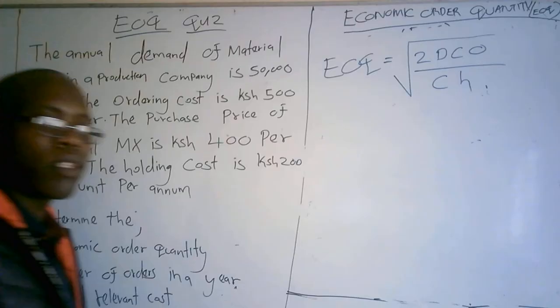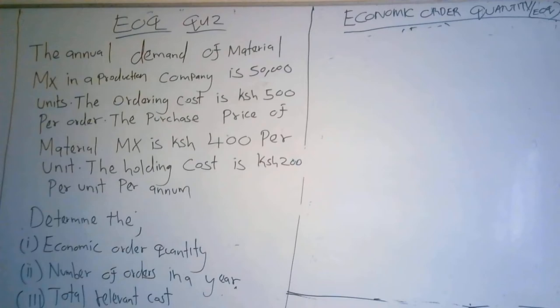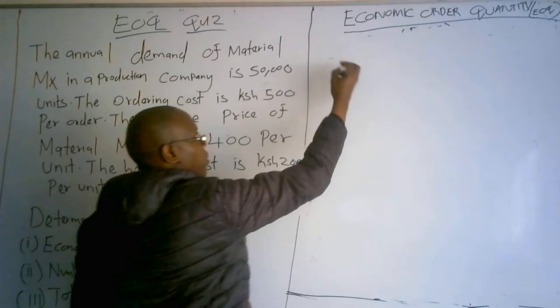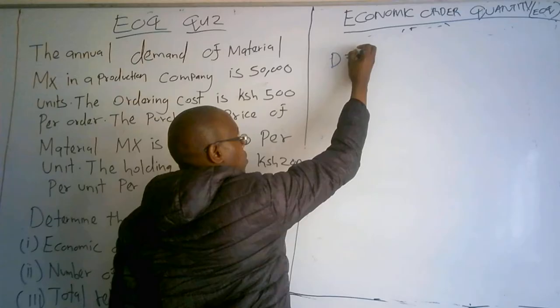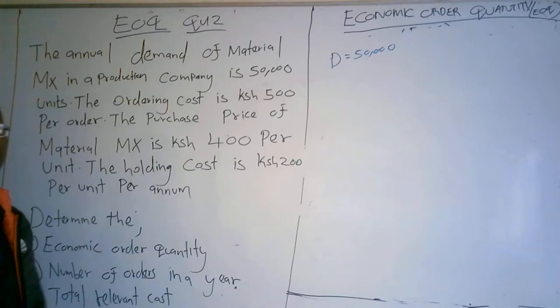Let us analyze the question before applying the formulas. The annual demand, which is D, is 50,000 units — they say the annual demand of material MX is 50,000. So D equals 50,000.